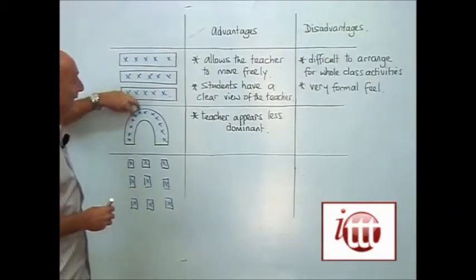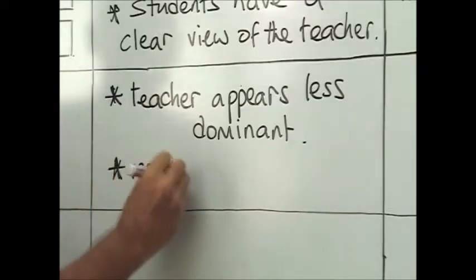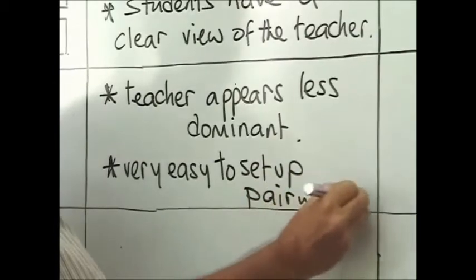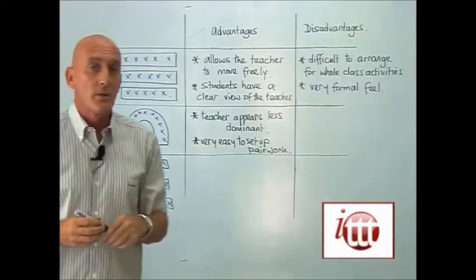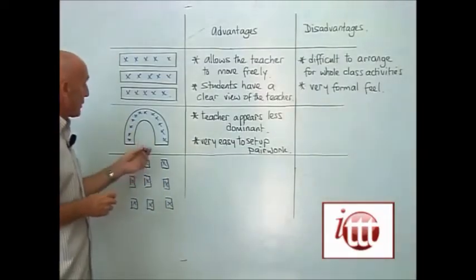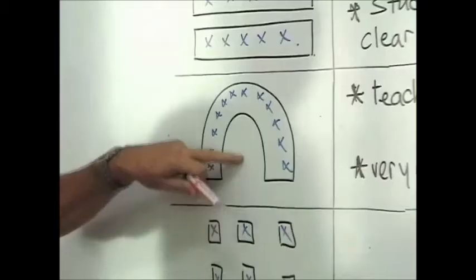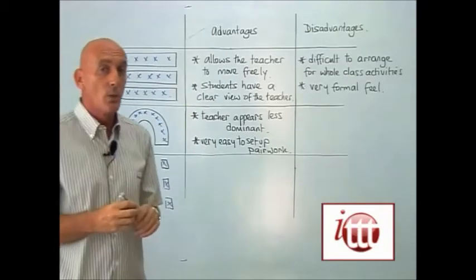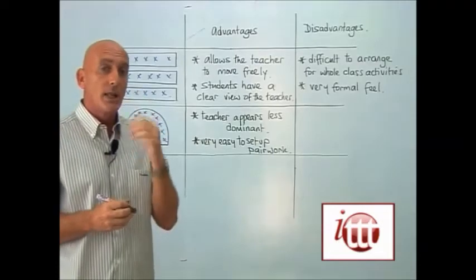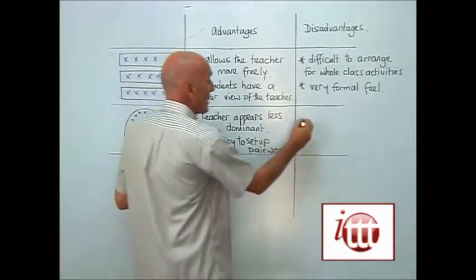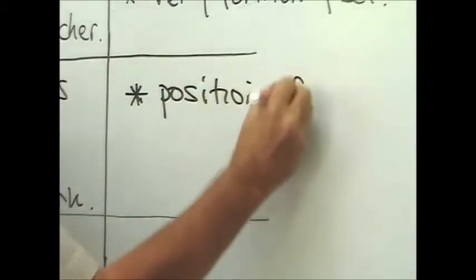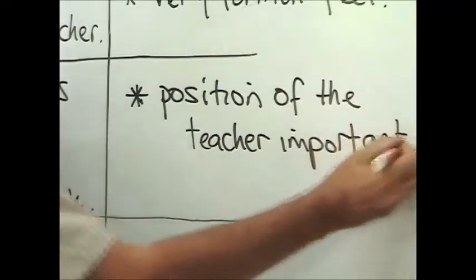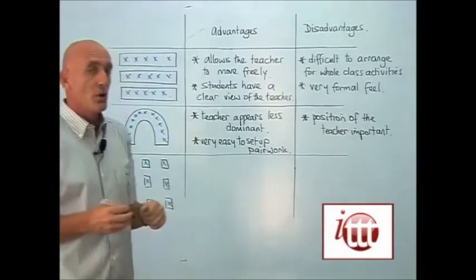With the horseshoe, it's very easy to arrange pair work. There are some potential disadvantages, however. Perhaps the most important is the actual position of the teacher within this horseshoe. If the teacher moves inside the horseshoe, then some students will actually be behind us, and therefore they will not be able to see our mouth when we are speaking — they will lose a lot of information by not being able to see our mouth. So one of the major disadvantages is that the position of the teacher becomes very important and not moving into that horseshoe.